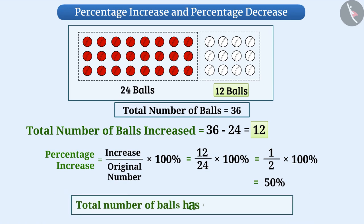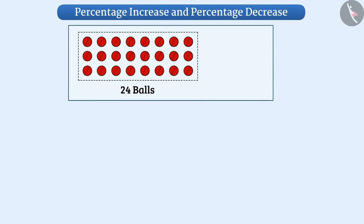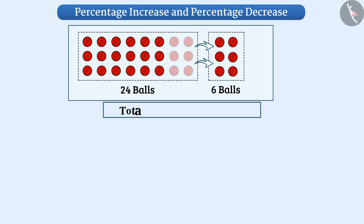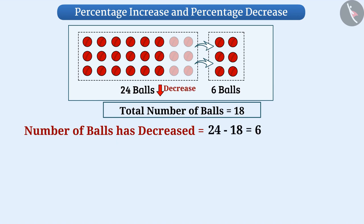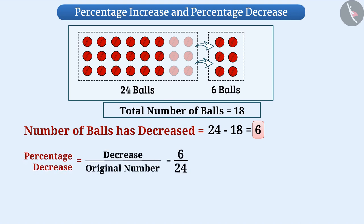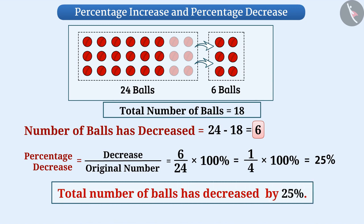Out of 24 balls, we removed 6 red balls, so the total is now 18 — the number of balls decreased by 6. The percentage decrease is 6 divided by 24 multiplied by 100 percent, equal to 1 divided by 4 multiplied by 100 percent, equal to 25 percent. Sometimes we need to estimate a rough percentage, and understanding estimation helps us — we will cover this in the next video.